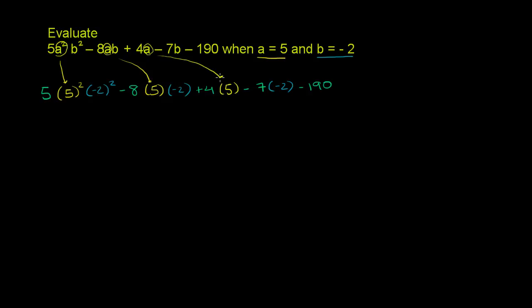Every time we saw a b, b squared, we substituted the b with negative 2. So a b, we substituted it with negative 2. We saw a b. Substituted it with negative 2.